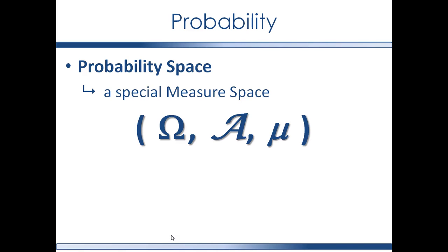Here's the measure space from previous measure theory videos. Once you start talking about probability spaces, there are specific names to the three parts. The first is the outcome set — what we were calling the original set in the measure theory videos. In probability theory, we call this the outcome set and represent it with the Greek letter omega. The elements in this set are called outcomes and are represented with little omegas.